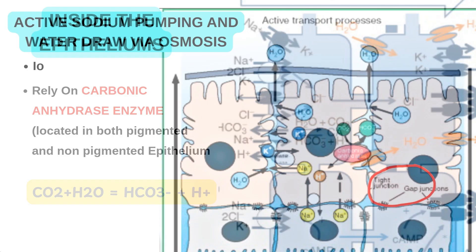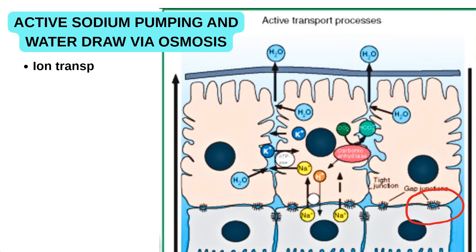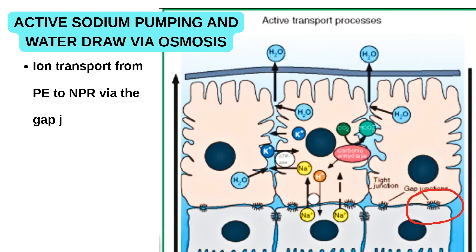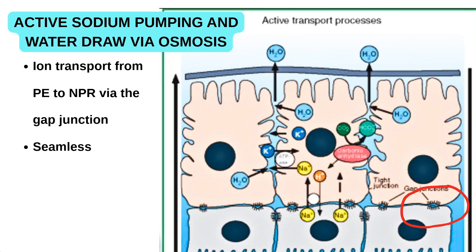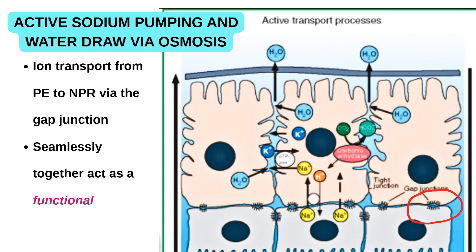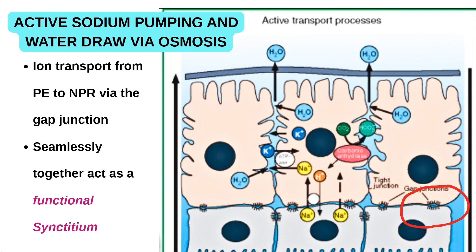The ions which have entered the pigmented cells need to enter the non-pigmented cells. This happens via gap junctions, and because of their presence, the bilayered epithelium of the ciliary process acts as a syncytium.